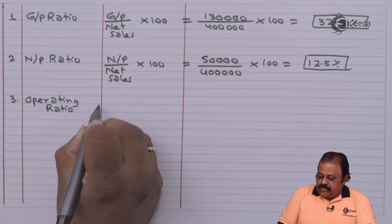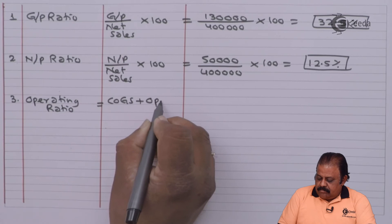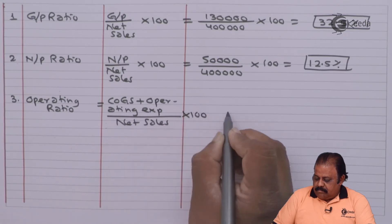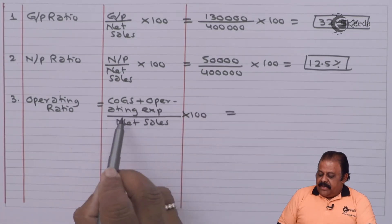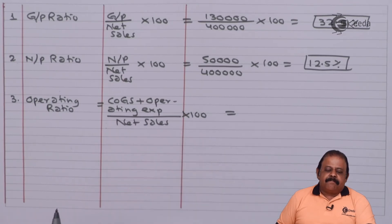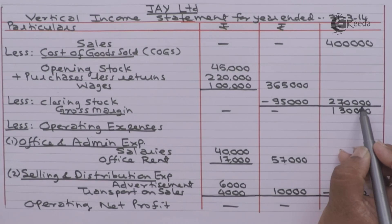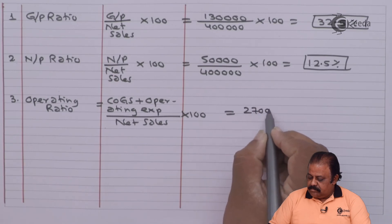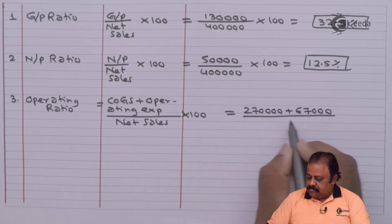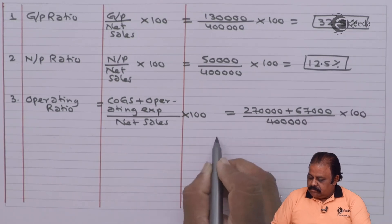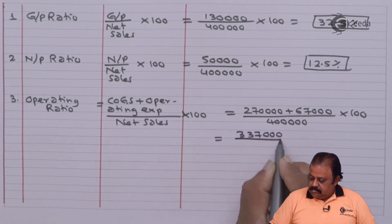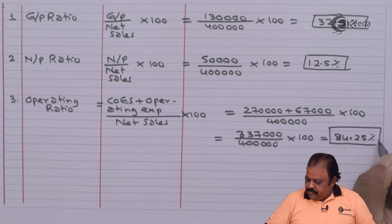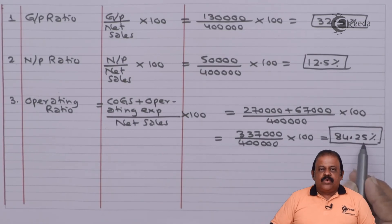Operating ratio equals cost of goods sold plus operating expenses divided by net sales multiplied by 100. Cost of goods sold 2,70,000 plus operating expenses 67,000, divided by net sales 4 lakhs, gives 84.25%.